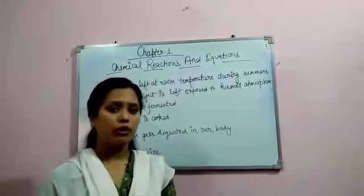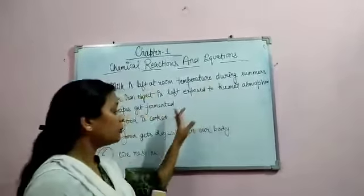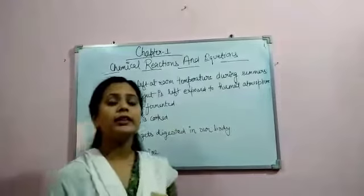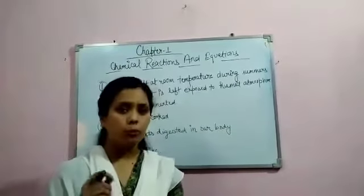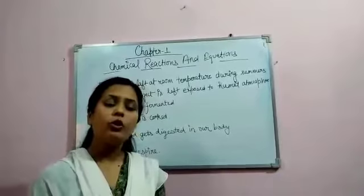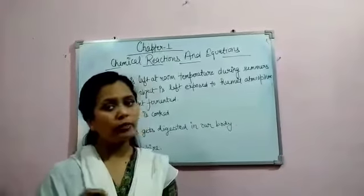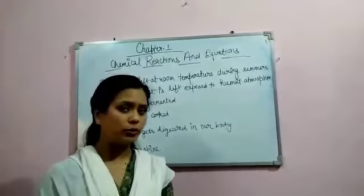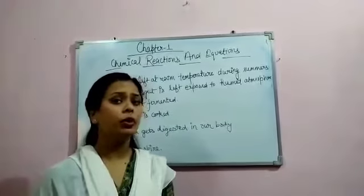Now let us try to define chemical reaction. All these examples are a process. So we can say that chemical reaction is a process in which two or more substances combine or react with each other to form a new substance with different properties.